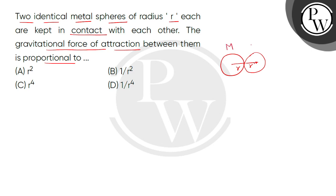They have masses M and M because they are identical. So they touch one another at this point. And we have to find what will happen with the gravitational force.